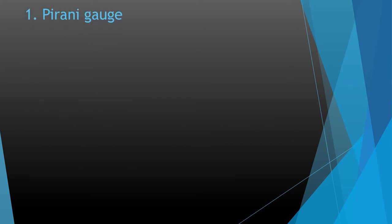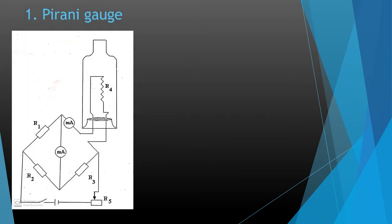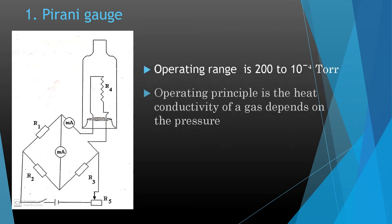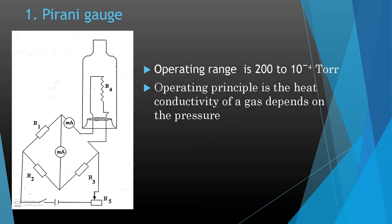Next is the Pirani gauge. This schematic diagram represents the Pirani gauge as an electrical circuit, which includes a Wheatstone bridge switch and a filament to be heated. The operating range is 200 to 10⁻⁴ Torr, and its operation is based on the fact that the heat conductivity of a gas depends on its pressure.